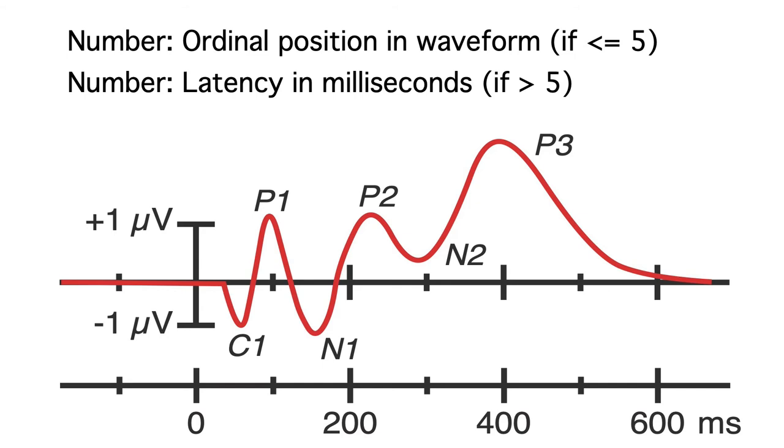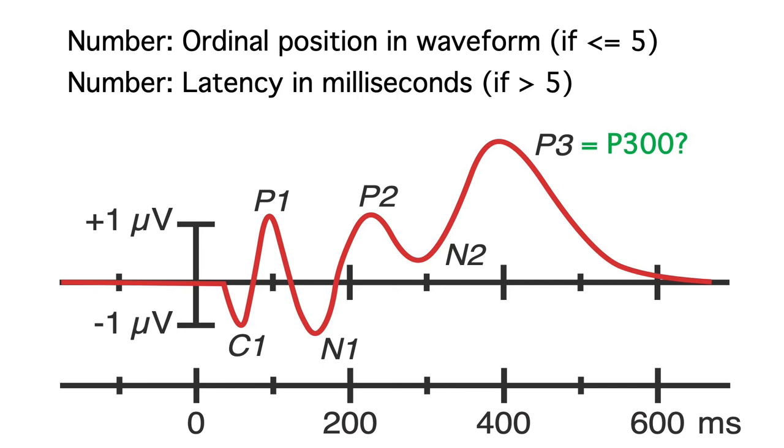The number in a component label can also be confusing. The P3 wave is often called P300 because it peaked at around 300 milliseconds in the first study where it was observed. But it can peak as late as 600 milliseconds in some experiments. And yet it's often called P300 under the assumption that it's the same brain process but occurs at different times depending on the difficulty of the task.